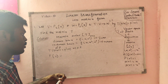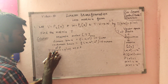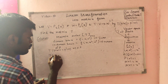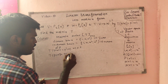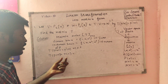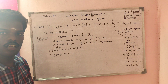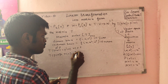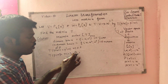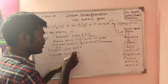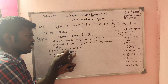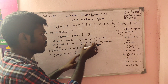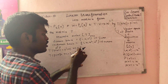First, T of 1: the input is a constant, so P dash of x is 0. The output is 0. In the codomain basis {1, x, x², x³}, there is no constant part, no x part, no x² part — so the output vector is [0, 0, 0, 0].